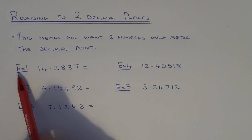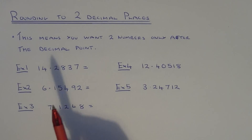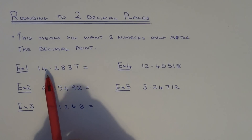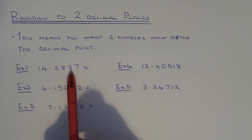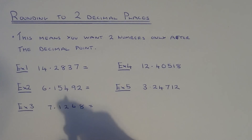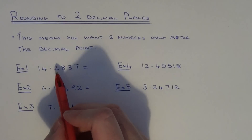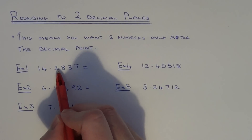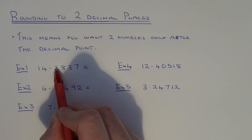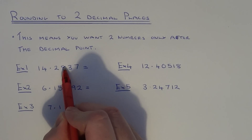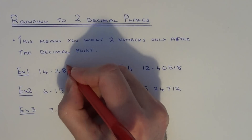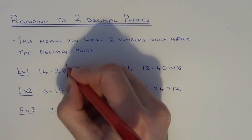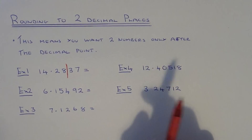Let's take a look at example one. We've got to round this number, 14.2837, to two decimal places. We want two numbers after the decimal point in our answer, so one, two — we're going to cut our number off here.